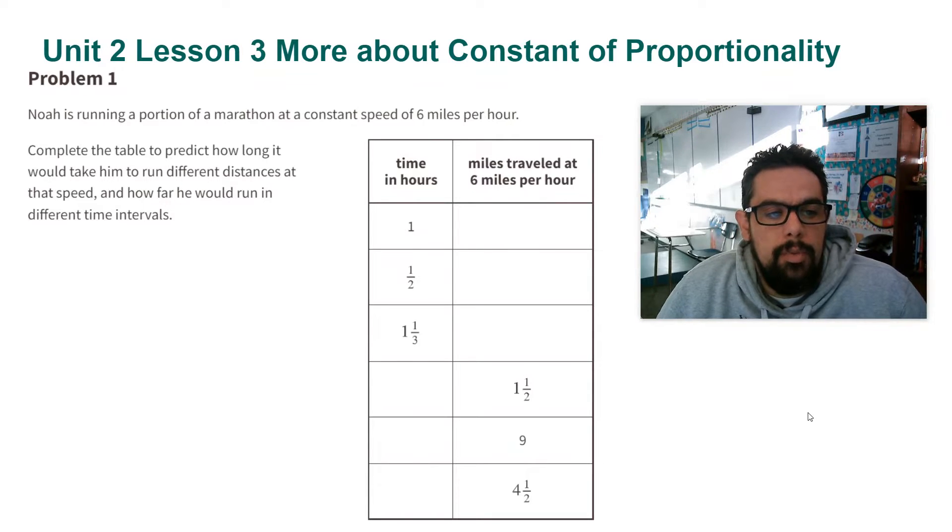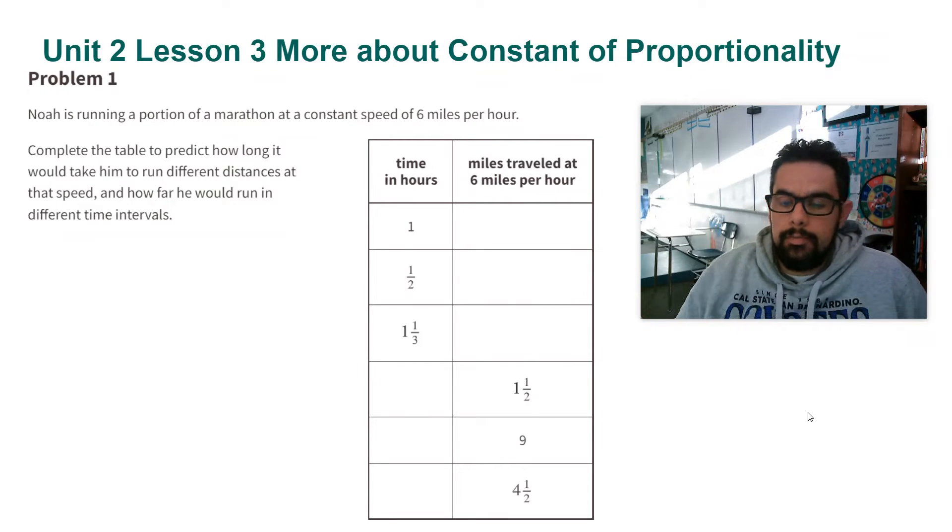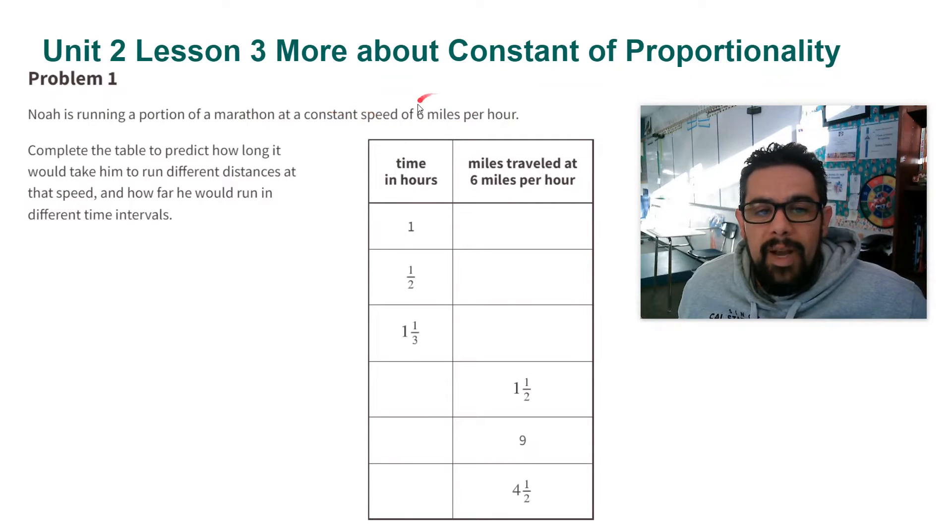table to predict how long it would take him to run different distances at this speed and how far he would run in different time intervals. So we have here he runs 6 miles per hour. This is the constant